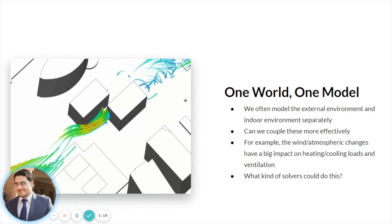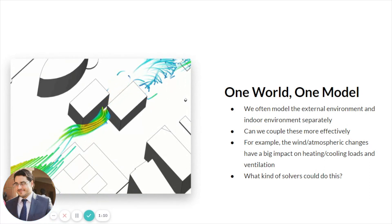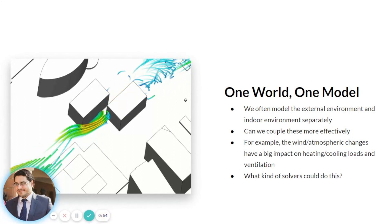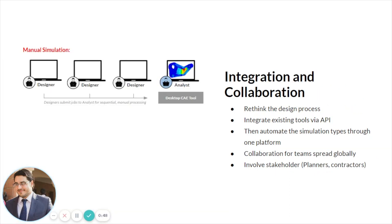For example, wind and atmospheric changes have a huge impact on heating and cooling loads and ventilation. The question is, what kind of solver do we need to capture and couple that environment? SimScale has next-generation solvers, including the Lattice Boltzmann method, that — coupled with cloud-based GPUs and parallel simulation capabilities — makes this kind of simulation a lot more possible and realistic.